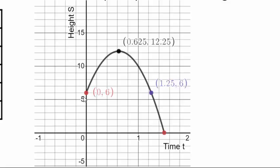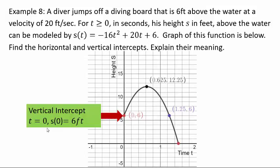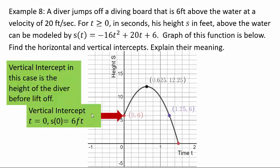These coordinates, 0.6 and 1.50, play a specific role. We say this 0.6 is our s-intercept or our vertical intercept. Intercept means where the graph hits the axis, the vertical axis. So our vertical intercept is at t equals 0, s of 0, 6 feet. What does that mean? It's the height of the diver before lifting off to dive.